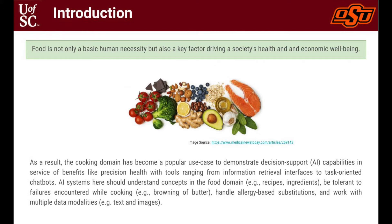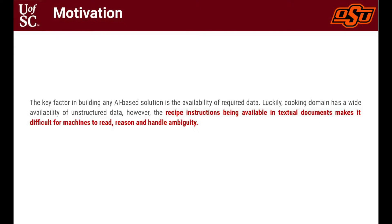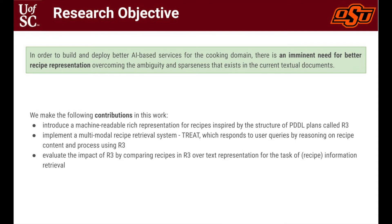AI systems here should be able to understand concepts in the food domain, e.g., recipes, ingredients, etc., be tolerant to failures encountered while cooking, e.g., browning of butter while baking cookies, and also be able to handle allergy-based substitutions and work with multiple data modalities, i.e., text and images. Data plays a key role in building any AI-based solution. Although there is widespread availability of cooking instructions for a wide set of recipes, the data is unstructured and being available in textual documents makes it difficult for machines to read, reason, and handle ambiguity. We identified that in order to build and deploy better AI-based services for the cooking domain, we need to channel our efforts in building a better recipe representation that can overcome the ambiguity and sparseness existing in the current textual documents.